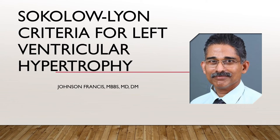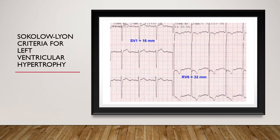Sokolov-Lyon criteria is one of the most popular voltage criteria for detection of left ventricular hypertrophy. In this ECG we can see chest leads V1 to V6. The S wave in V1 is 16 mm and the R wave in V6 is 32 mm. In addition, you can see ST depression in V5 and V6, along with T wave inversion in V4, V5, and V6. These are features of left ventricular hypertrophy.